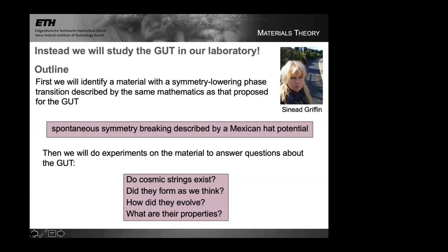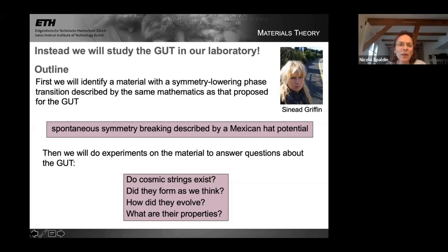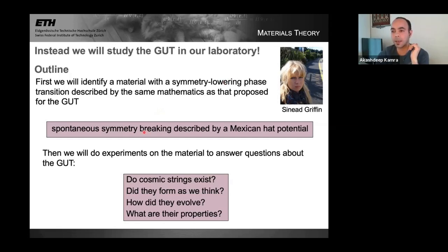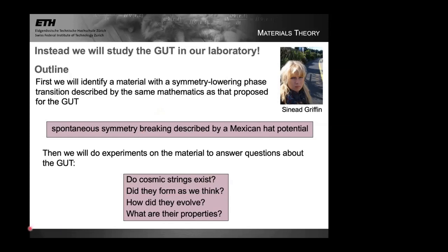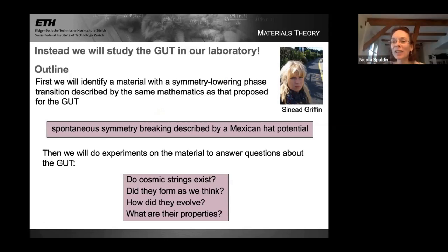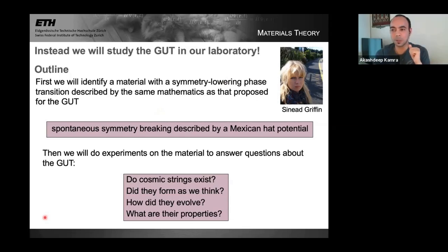Question from Danielle: in this particular theory of cosmology, what is the U(1) field — is it the Higgs field? No, I don't think so. I think this is way earlier than the Higgs field — it's the grand unification transition at 10^-37 seconds. But the short answer is I don't know, and I invite any cosmologists in the audience to weigh in.